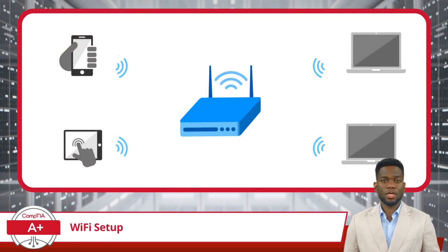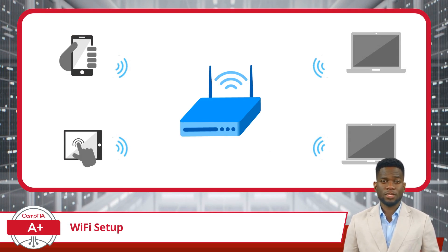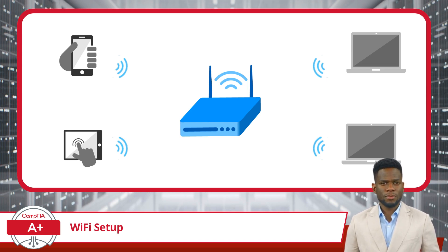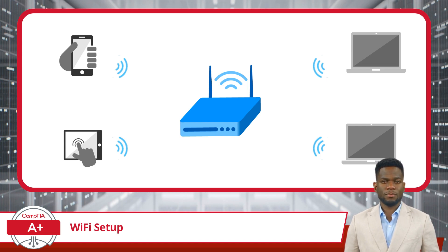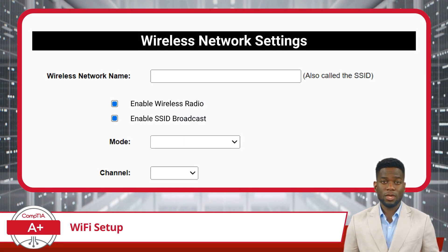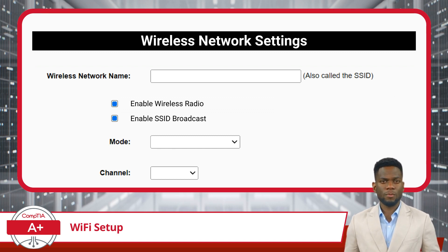It may be easier to think of a network access point as a wireless version of a switch. It acts as a bridge between devices and the network, creating a wireless connection for them to communicate with each other. But what exactly is involved in configuring these devices? Well, there are quite a few configuration settings, but we will stick to the basics and keep this video A+ appropriate.